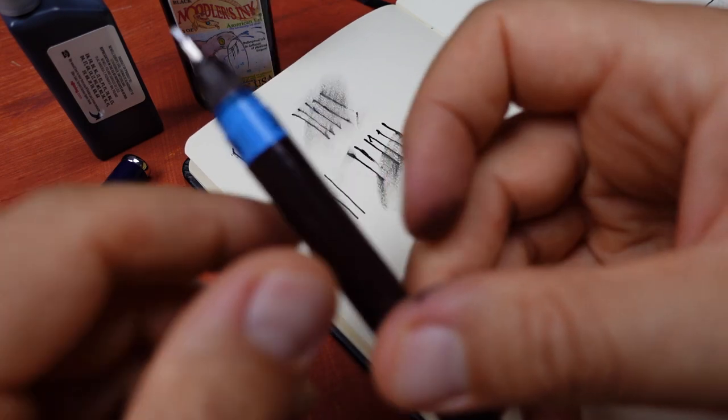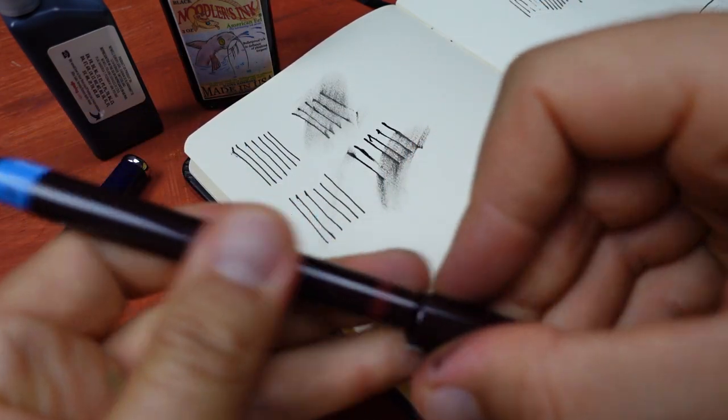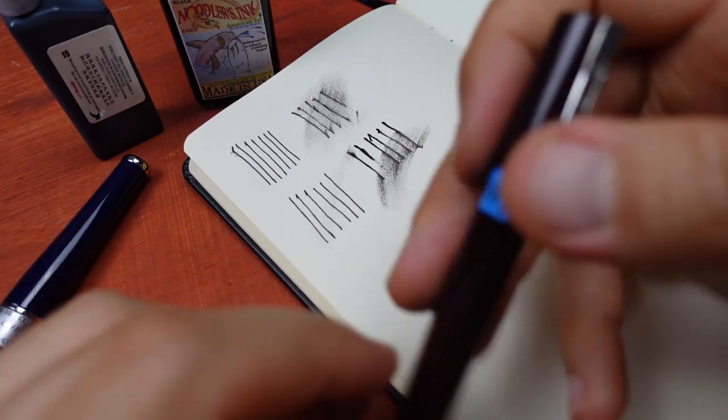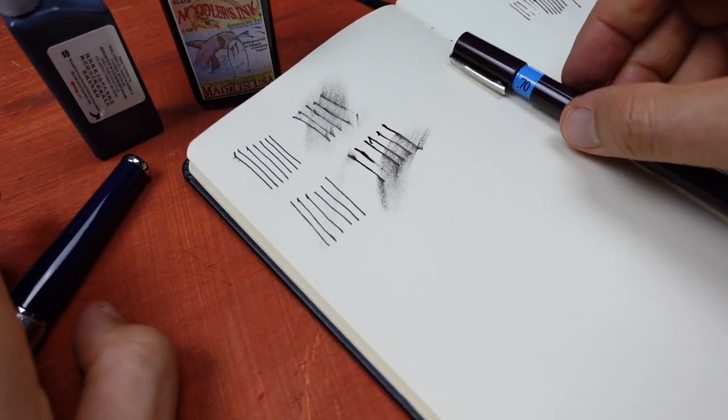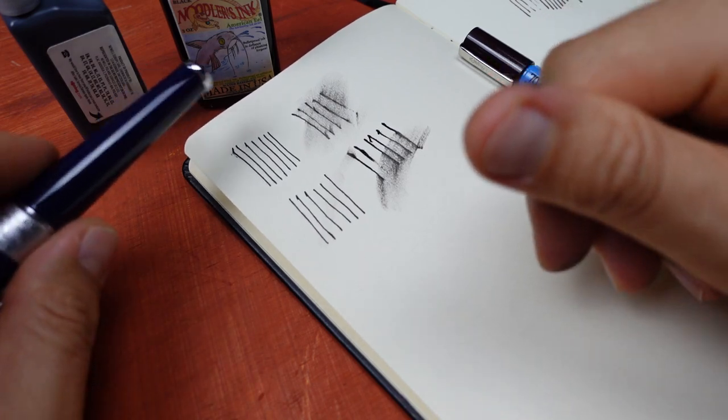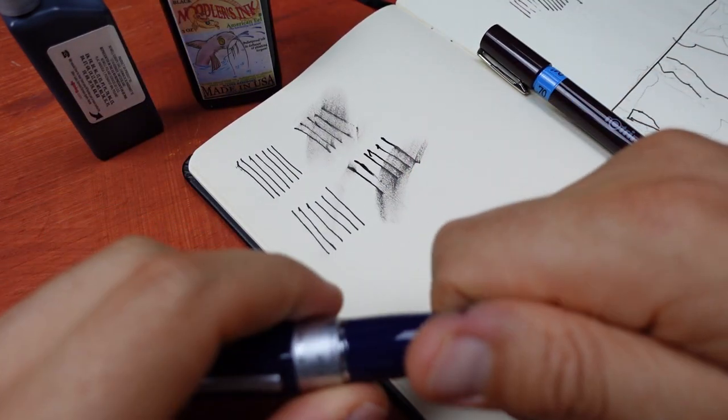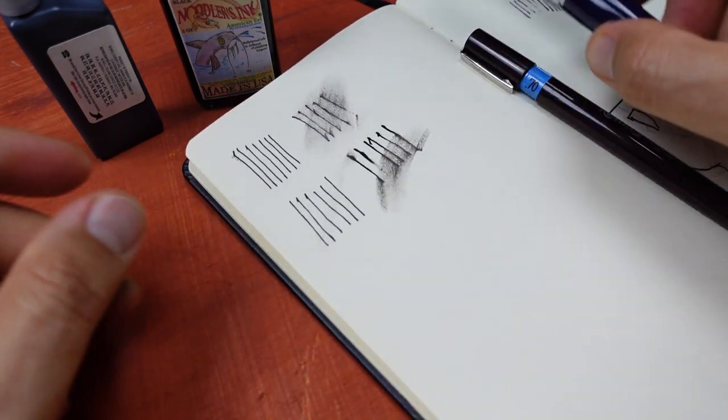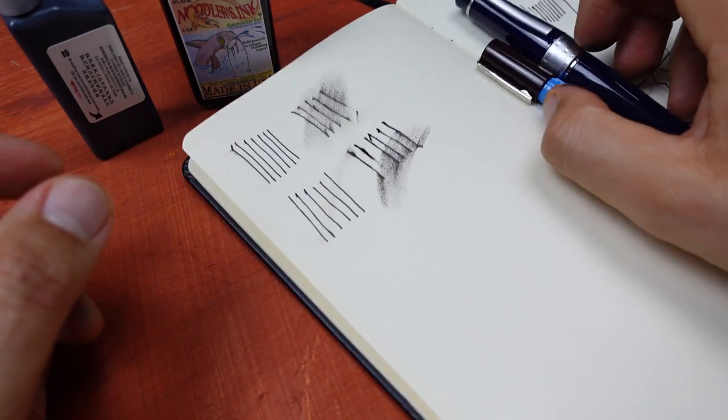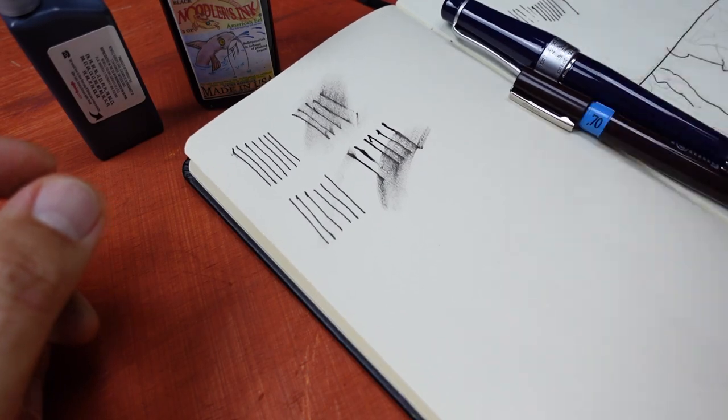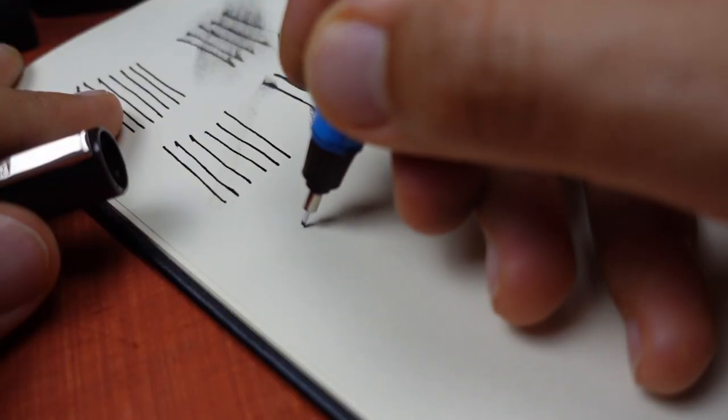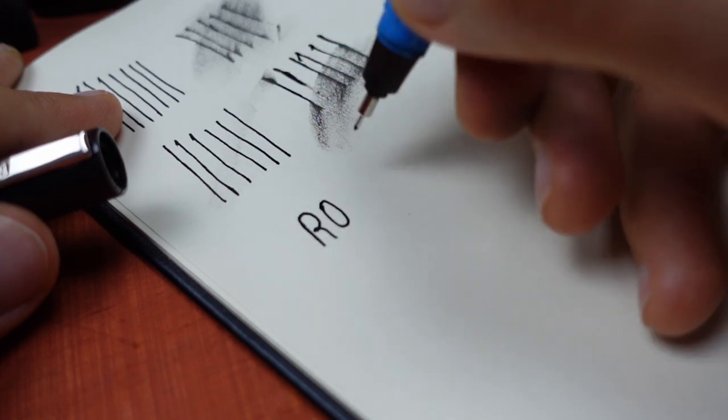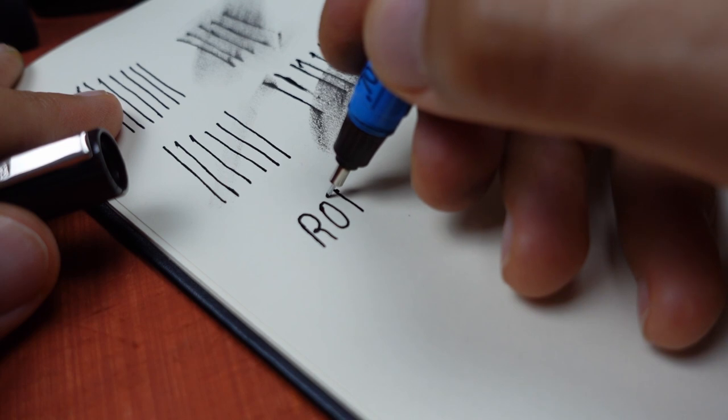So, obviously, Rotring ink dries much quicker. And you can apply right away watercolor or water on top of it. Let's try to do a test with water. So, I'll write something.